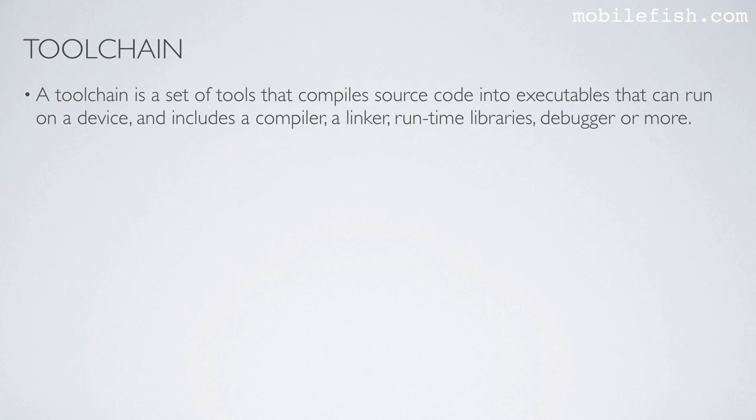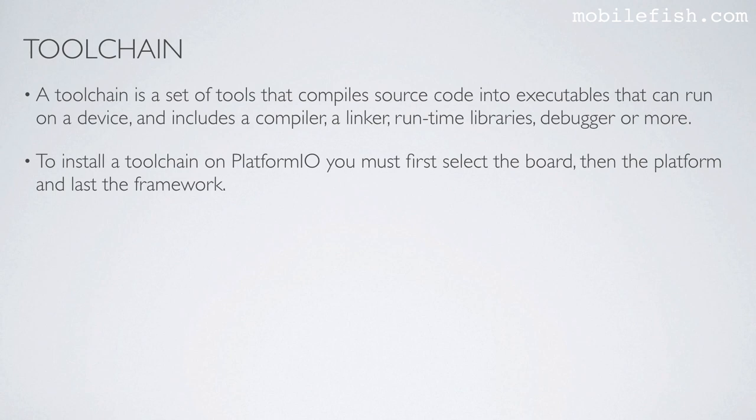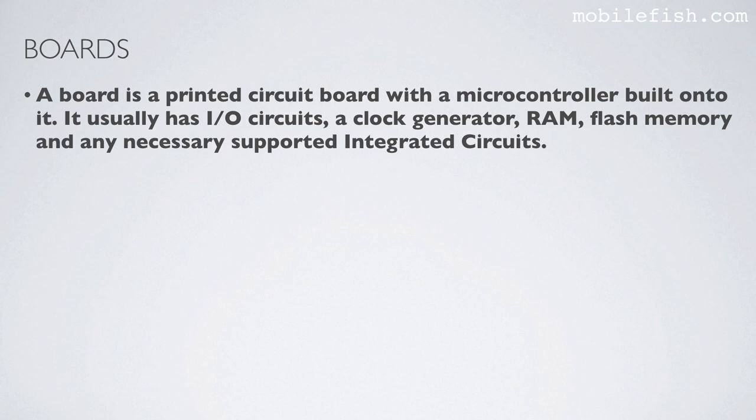A toolchain is a set of tools that compile source code into executables that can run on the device, and includes a compiler, a linker, runtime libraries, a debugger, and more. To install a toolchain on Platform.io you must first select the board, then the platform, and last the framework.